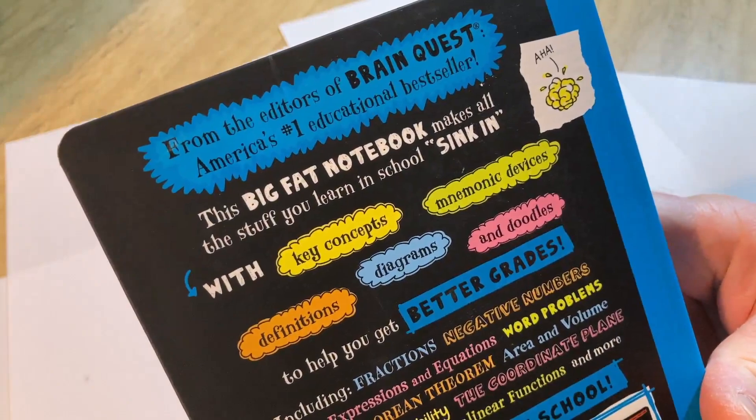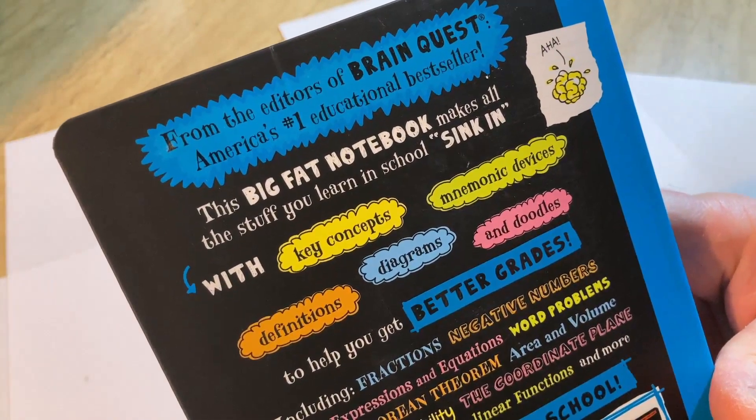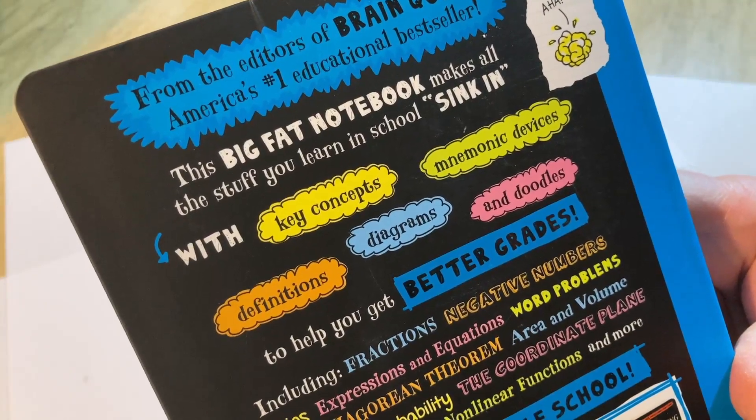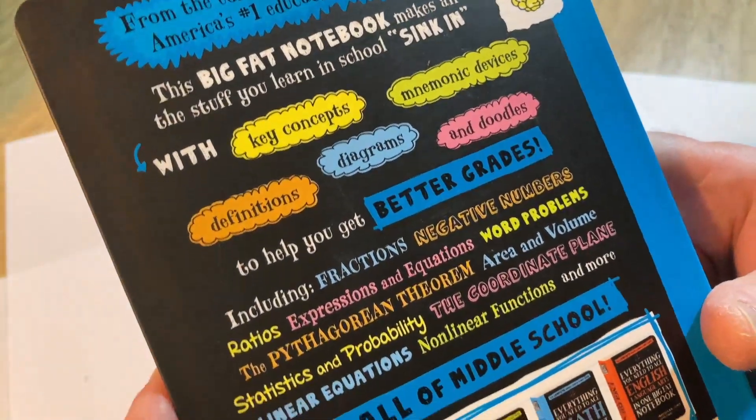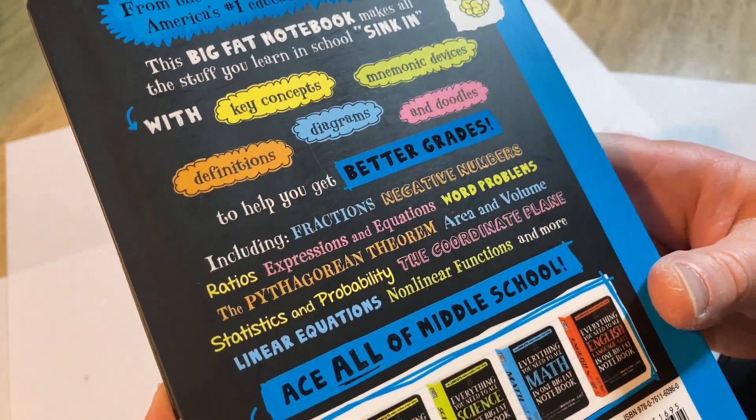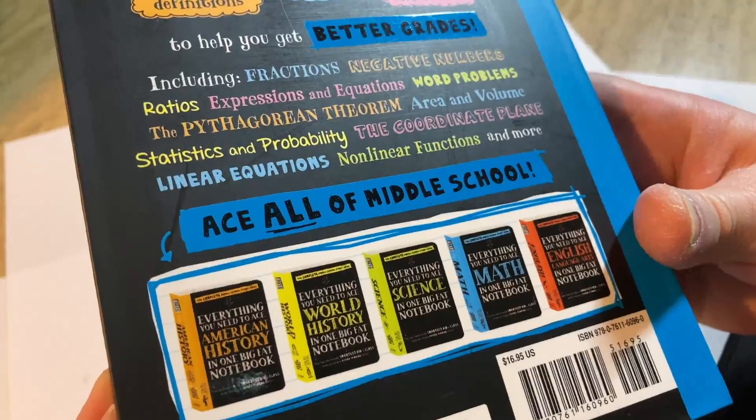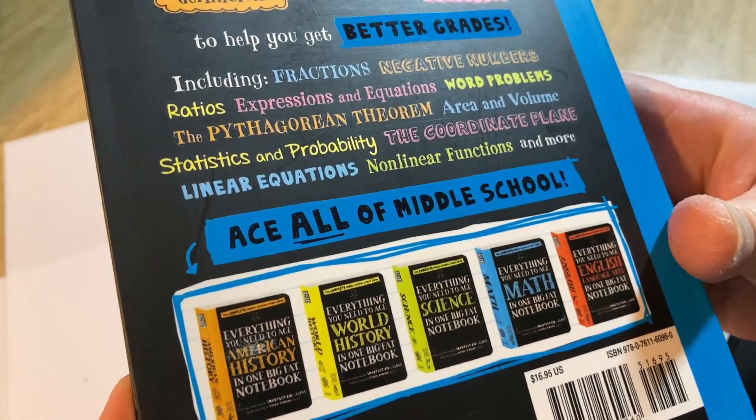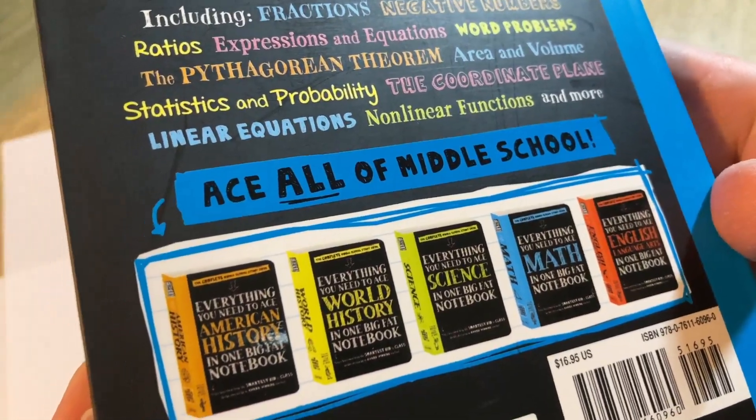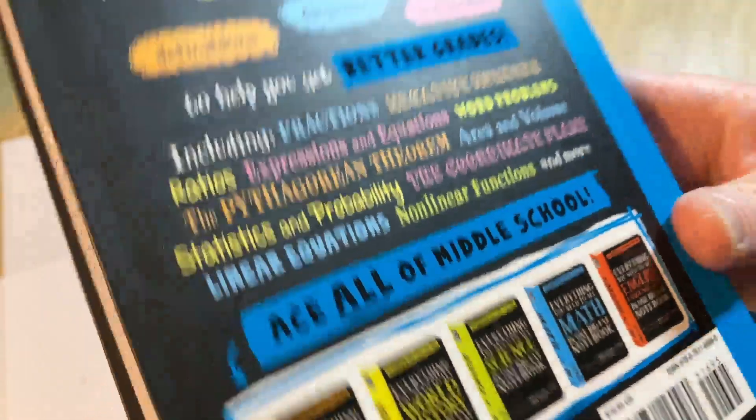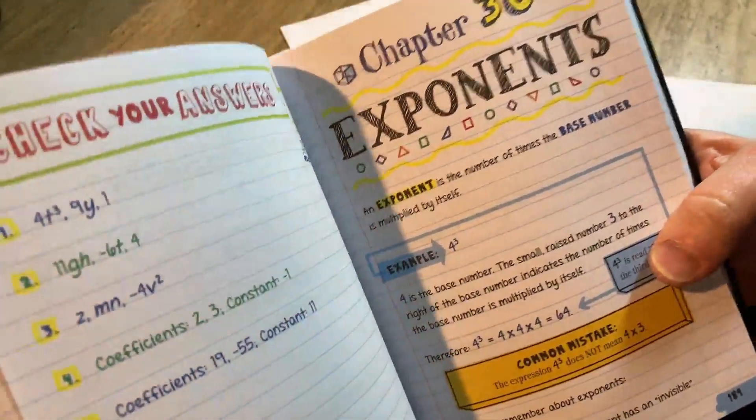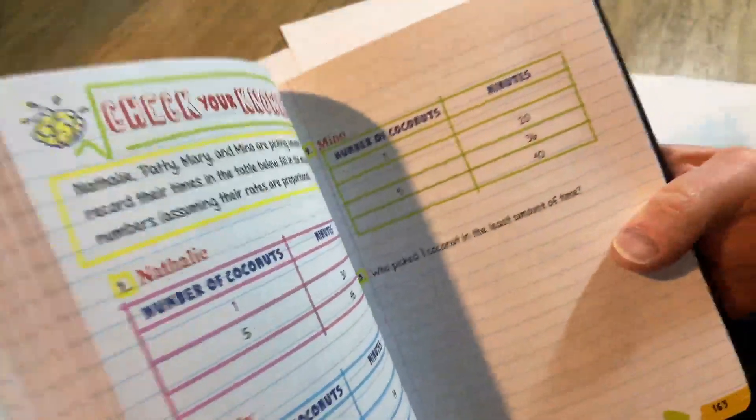Here's the back of the book. It says, from the editors of BrainQuest, America's number one educational bestseller. The big fat notebook makes all the stuff you learn in school sink in. So it's intended to help you do better in school. I'm looking at this from a self-study perspective. Maybe you're an adult and you didn't finish high school or you barely even went to high school or you just forgot everything. You can get a book like this one and you can get started with mathematics right away from the very beginning.